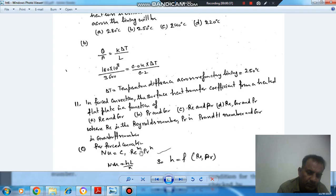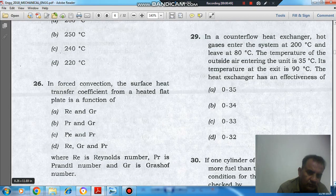equals C1 times Re raised to power m times Pr raised to power n. Nusselt number is hL/k, so h is a function of Reynolds number and Prandtl number, as you can see.